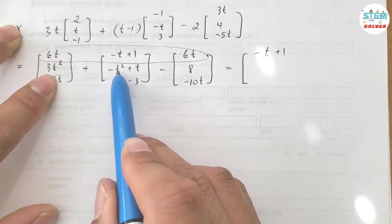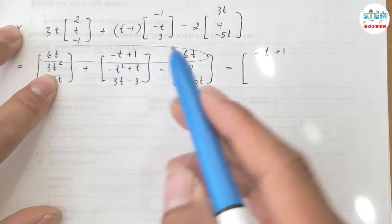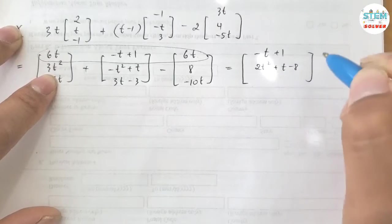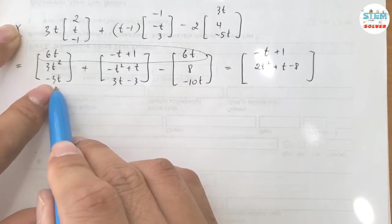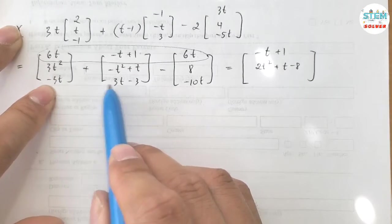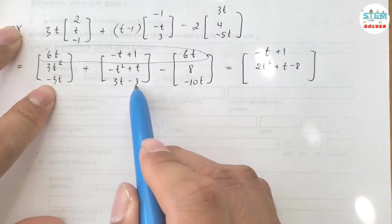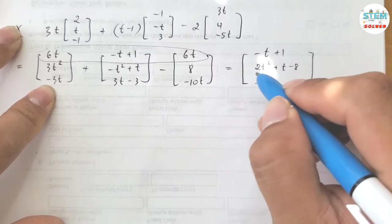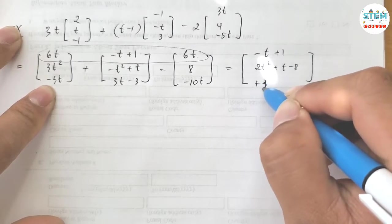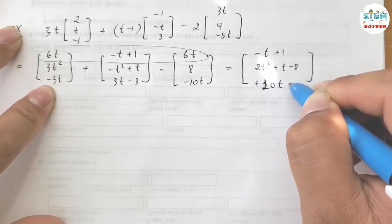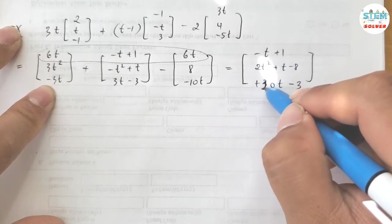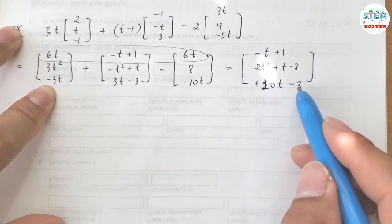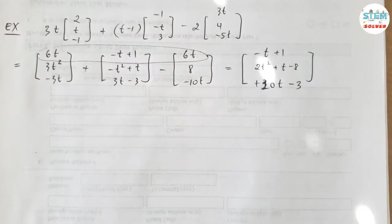3t squared minus t squared is 2t squared, plus t minus 8. Down here, negative 3t plus 3t cancel out, leaving negative 3, so negative 10t minus 3. So this is your final answer, that's it.